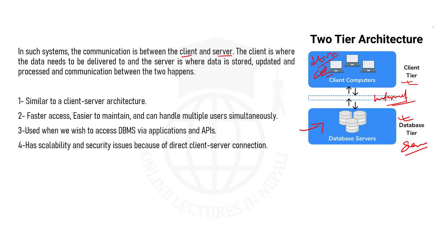When data is updated, it is stored on the server. The processor handles it, and then the client — through the server — gets the data delivered. Data can also be stored. So the communication happens through the internet or network. It is similar to client-server architecture. Two-tier architecture provides faster access as there is direct communication between client and server machines, and it is easier to maintain and can handle multiple users simultaneously via the Application Programming Interface.